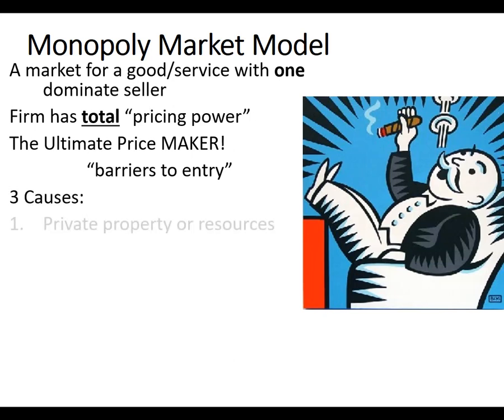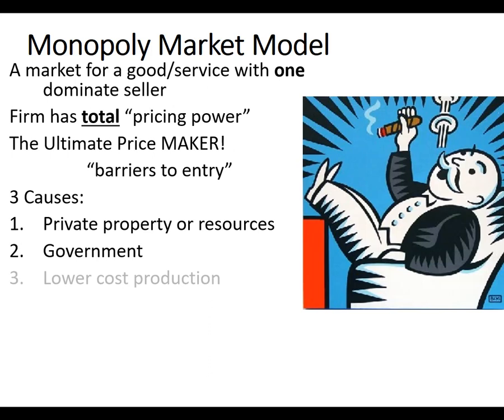Here are some examples of barriers to entry. One is private property: if somebody owns private property that you don't have access to, that's a barrier to entry. Another is resources — maybe you don't have the resources to make the intermediate good or input. The government can also create barriers to entry, sometimes for good reasons, sometimes for questionable reasons. Finally, somebody else can produce things at a lower cost, so lower-cost production might keep somebody out of a market.